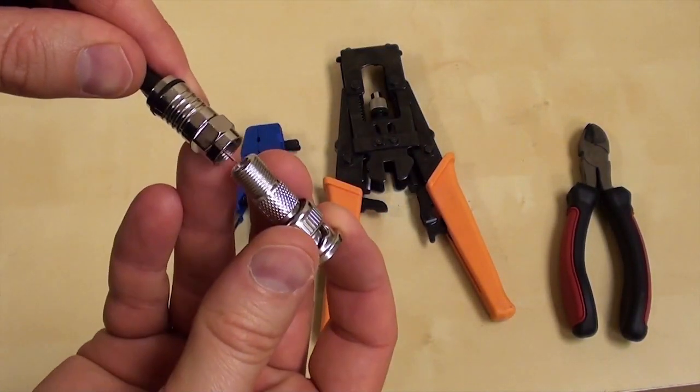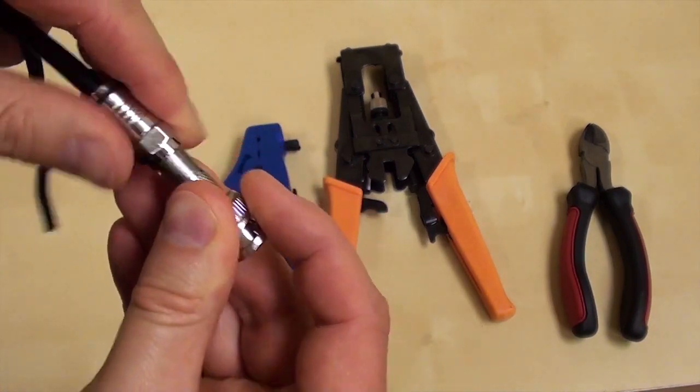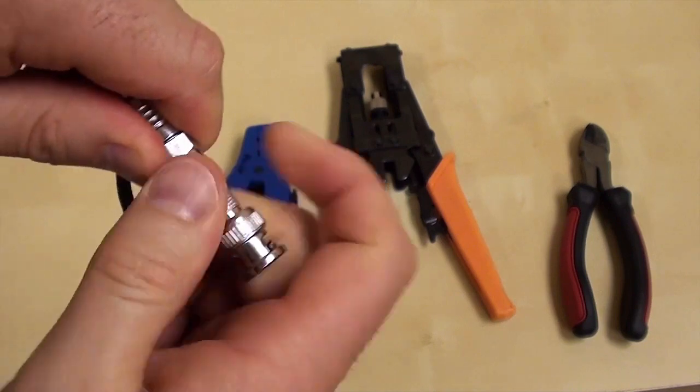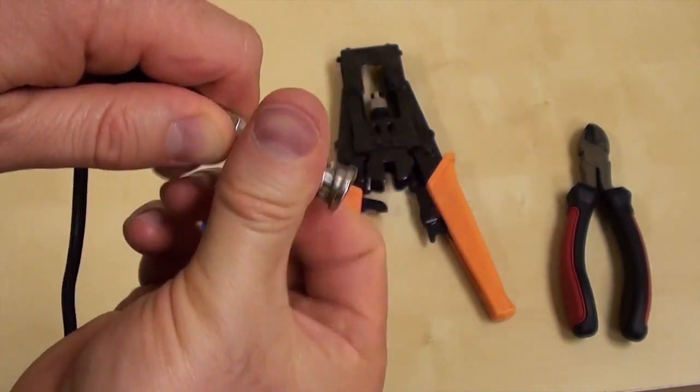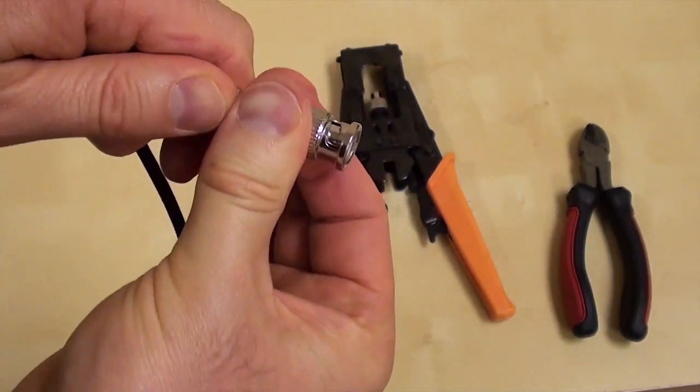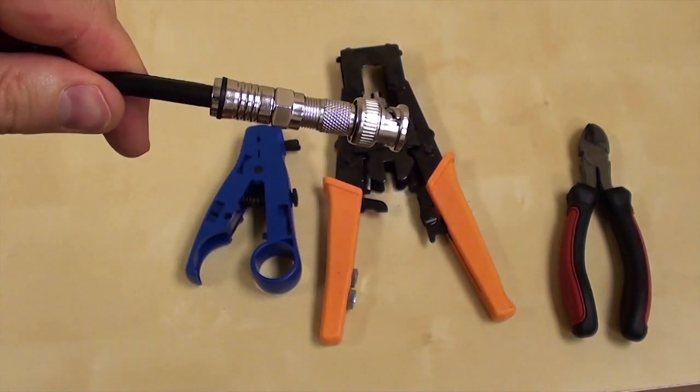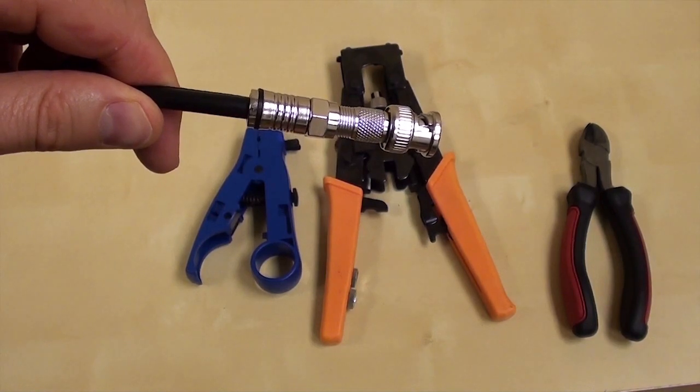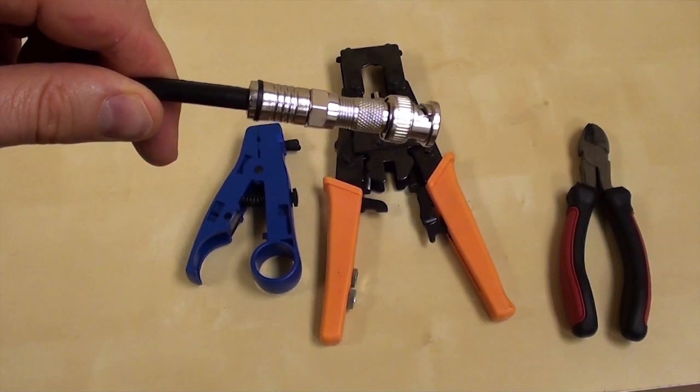Last, screw the BNC connector onto the F connector. And there it is. This is a very secure way to attach a BNC connector to RG-59 coax cable, and probably the most favorite method among most professional installers.